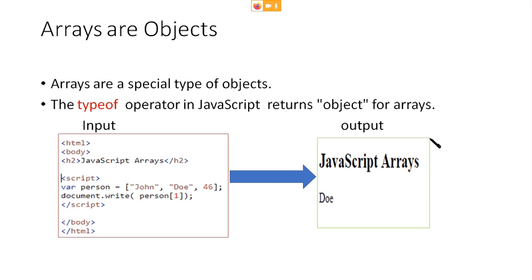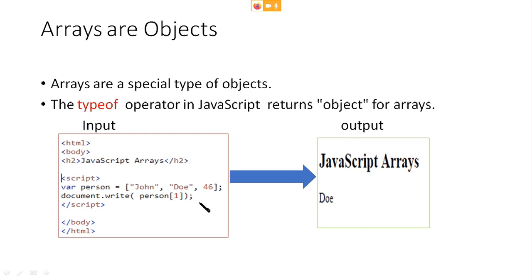Next, we can look at the typeof operator. What is the typeof operator regarding objects? Arrays are objects in the case of JavaScript. Here you can see a simple program using an array. Person is an array with values John, Doe, and 46. When you use document.write, person[1] means Doe will be printed. Arrays are viewed as objects — when we apply the typeof operator to an array, you can see 'object' is returned. So arrays in JavaScript are viewed as objects.